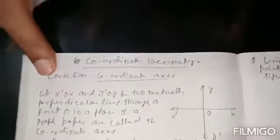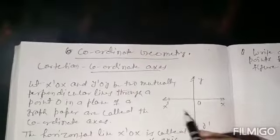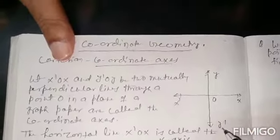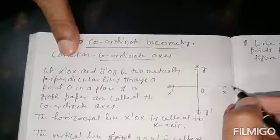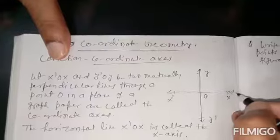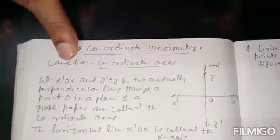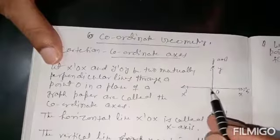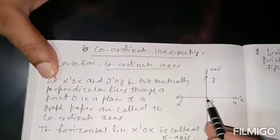X'OX is called the X-axis — this horizontal line X'OX is called the X-axis. And the vertical line YOY' is called the Y-axis. So, the horizontal line is called the X-axis and the vertical line is called the Y-axis. The point of intersection of the X-axis and Y-axis is called the origin, point O.